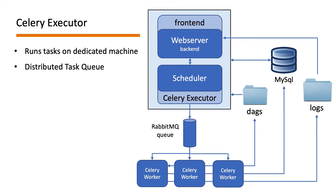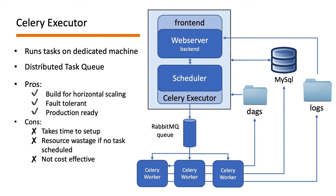The Celery executor, unlike sequential and local executors, runs the tasks on a dedicated machine. We have a distributed task queueing system in which the scheduler sends tasks to a queue, from where a fixed number of Celery workers pick up the tasks and execute them. It is built for horizontal scaling — you can pre-define a specific set of workers that will manage your tasks. It is fault tolerant: if one worker goes down, the task will be given to another active and healthy worker, making it quite reliable for production.